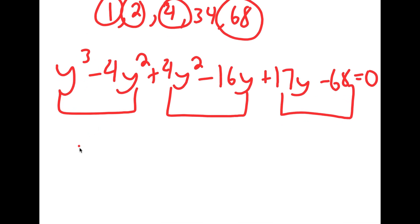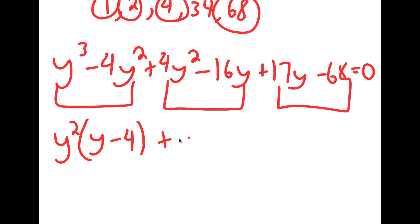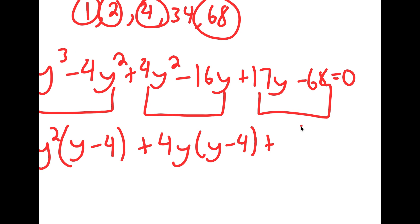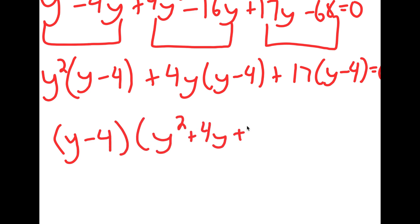I'm going to factor by grouping. From y to the power of 3 minus 4y squared, I factor out y squared — the greatest common factor — so I get y squared times y minus 4. From 4y squared minus 16y, I factor out 4y, so I get 4y times y minus 4. And from 17y minus 68, I factor out 17, so I get 17 times y minus 4 equals 0. Factoring out y minus 4 gives y minus 4 times y squared plus 4y plus 17 equals 0.